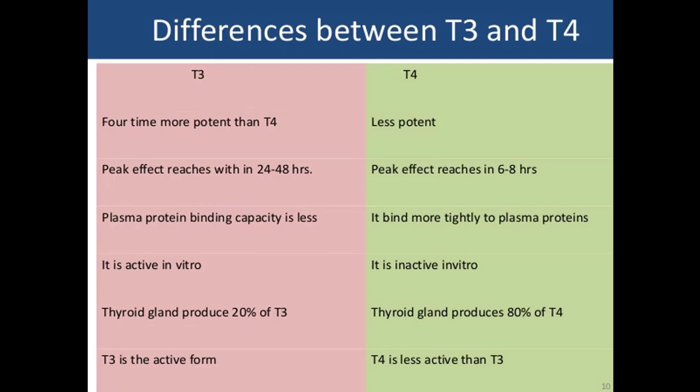The slide in front of you concerns the difference between T3 and T4. As you know from the previous lecture, they are produced from the thyroid gland and ultimately secreted into the bloodstream. T3 is four times more potent than T4, while T4 is less potent. Although T4 is produced in much greater quantity, T3 is produced in far less quantity but its action is four times more potent.